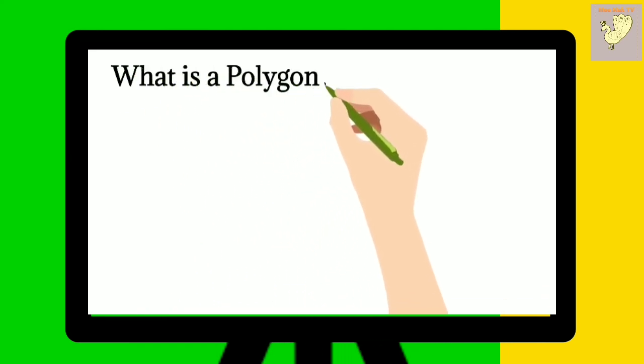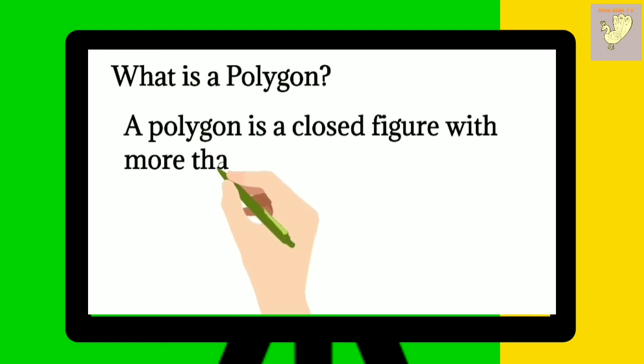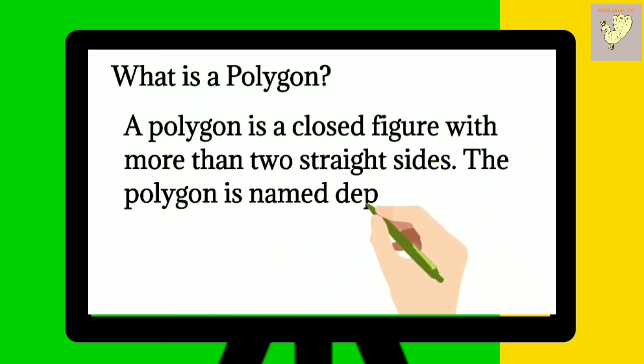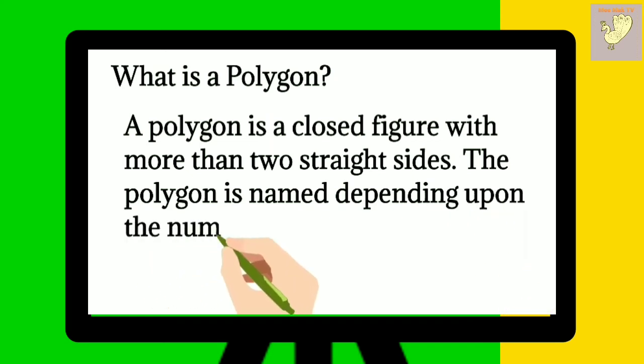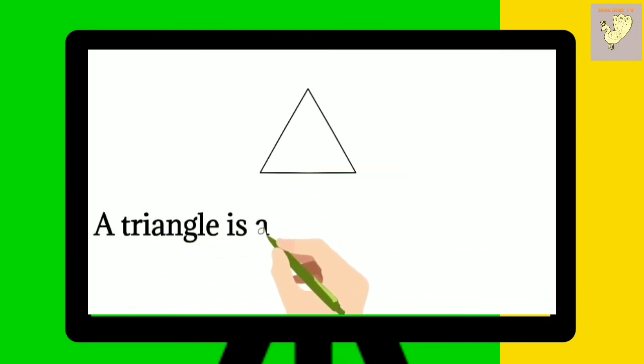What is a polygon? A polygon is a closed figure with more than two straight sides. The polygon is named depending upon the number of sides it has. For example, triangle is a polygon with three sides.